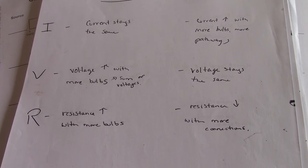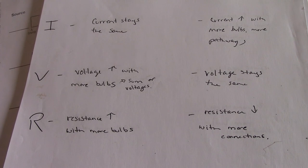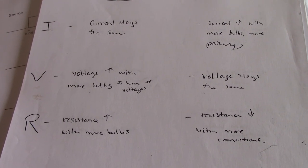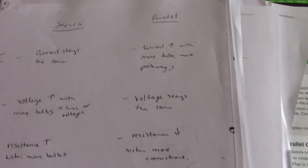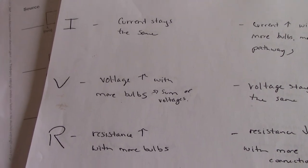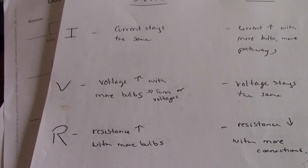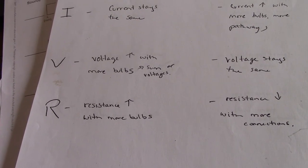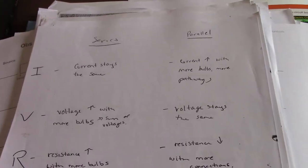In a series circuit, voltage is the sum of all voltages, so voltage increases with more bulbs or resistors added — we need more voltage to fuel that pathway. In a parallel circuit, voltage stays the same. If you have a 12-volt battery with multiple pathways, all pathways receive 12 volts. But with a single pathway and a 12-volt battery, that 12 volts is spread across all resistors — one might get two volts, another four volts, etc. Resistance increases in series and decreases with more connections in parallel.